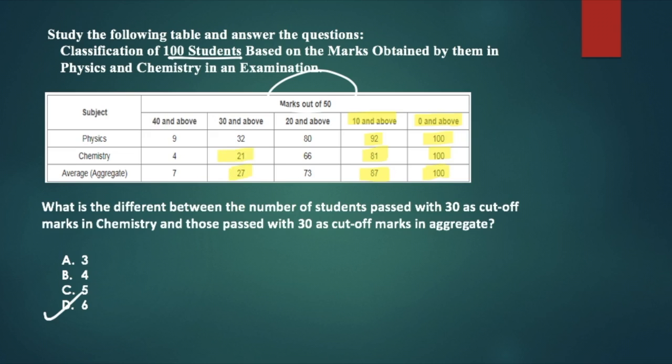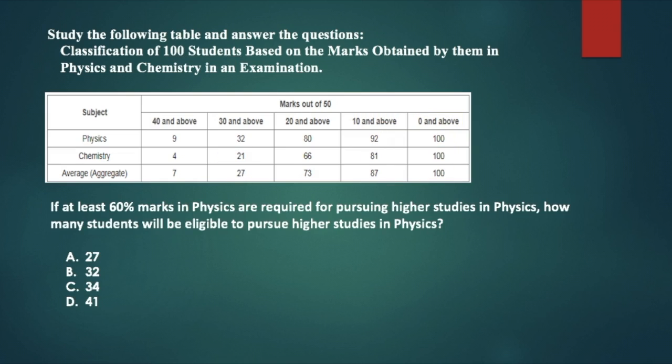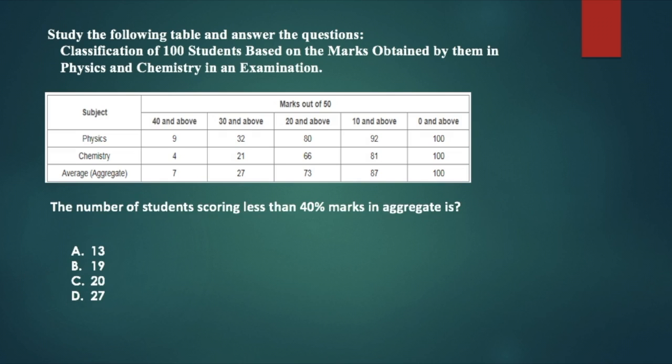The next question asks, if at least 60% marks in physics are required for pursuing higher studies in physics, how many students will be eligible to pursue higher studies in physics? So our answer is 32. Very simple questions and these are the kind of questions that you get in the examination. So if you study the chart or flowchart or graph and understand it, after that everything becomes very easy.